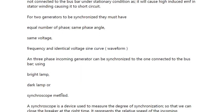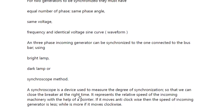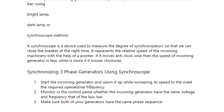A three-phase incoming generator can be synchronized to the one connected to the bus bar using the bright lamp, dark lamp, or synchroscope method. A synchroscope is a device — you may have seen it on the panel on ships — it has dots arranged in a circle like a watch face. It is used to measure the degree of synchronization so we can close the breaker at the right time, at 12 o'clock. It represents the relative speed of the incoming machinery using a pointer. If the pointer moves anti-clockwise, the speed of the incoming generator is less; it must always move clockwise.